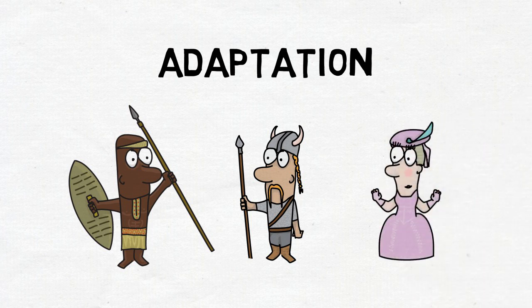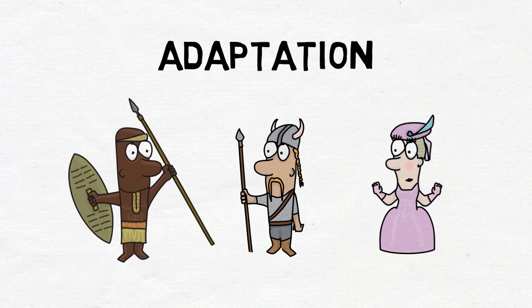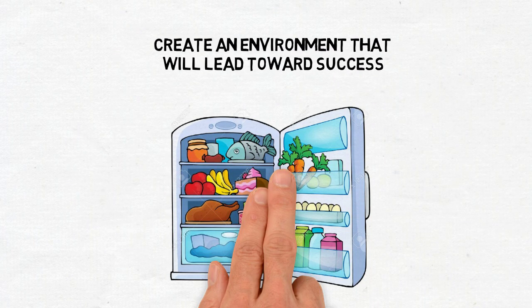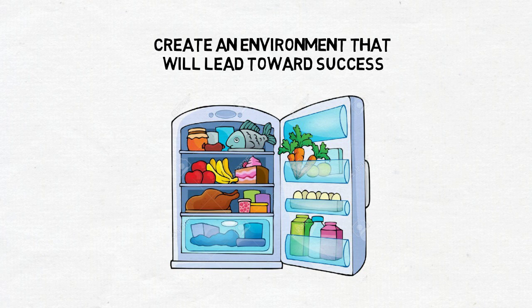Willpower and discipline only go so far. So the key is developing an environment that will support you to eat in a way that sustains you on the day to day, but also keeps you healthy in the long run.